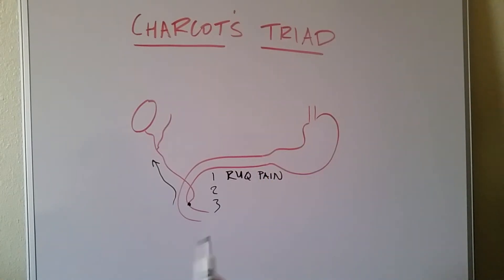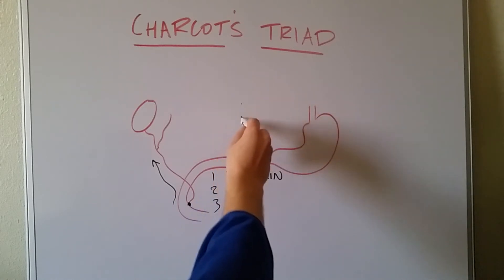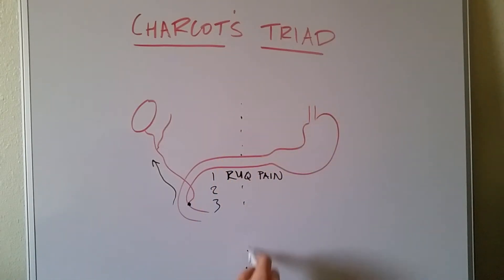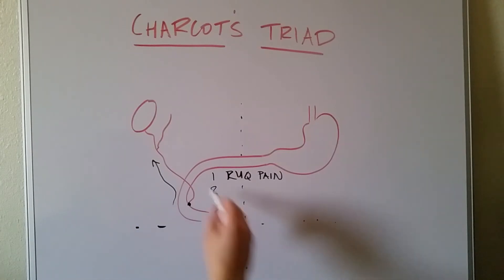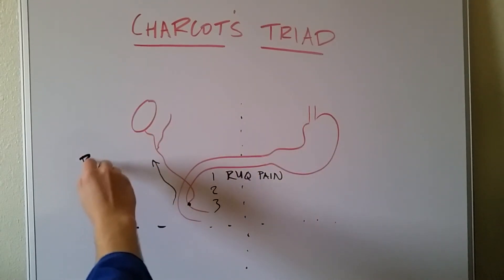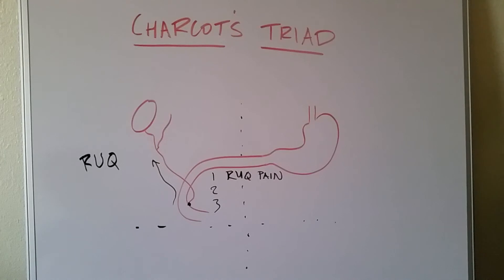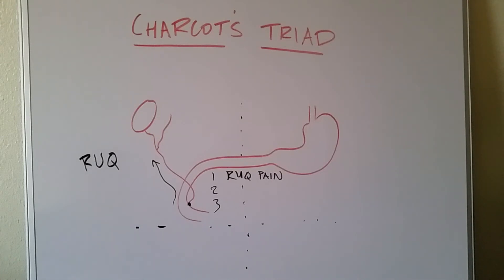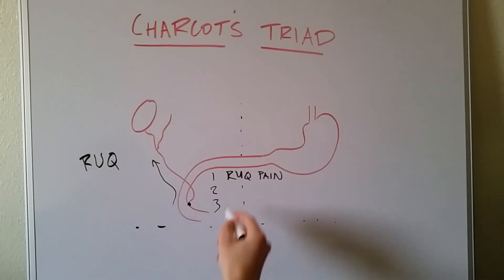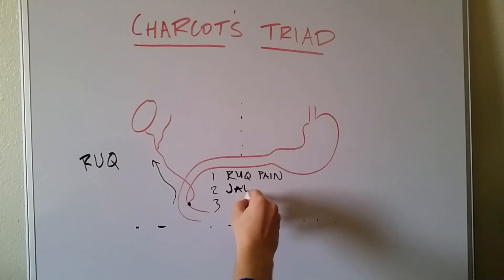And why right upper quadrant? Well, just look at where we're at in the abdomen. The quadrant that we're talking about is the right upper quadrant, so you're going to have pain there. The other thing you're going to see is jaundice, because of that stasis of bile that we're talking about and the buildup of bilirubin — because the bilirubin can't be excreted. Jaundice: you're going to see yellowing of the sclera and yellowing of the skin. So the second part of the triad is going to be jaundice.